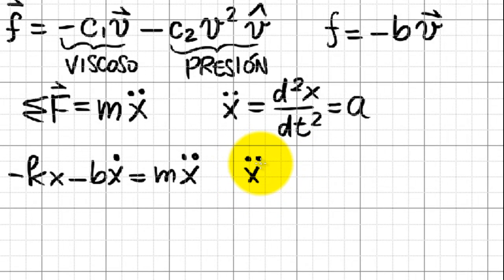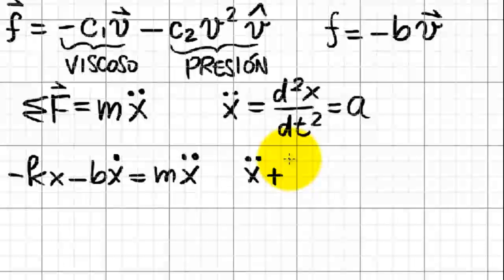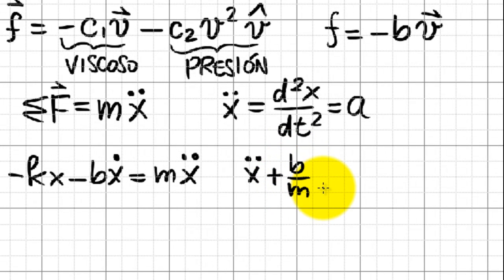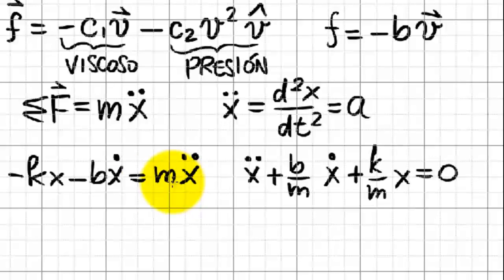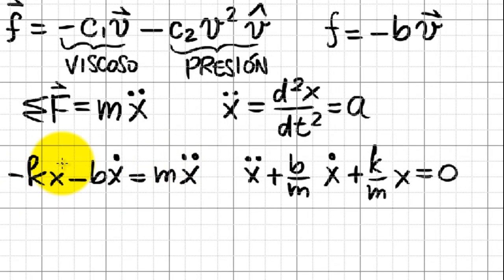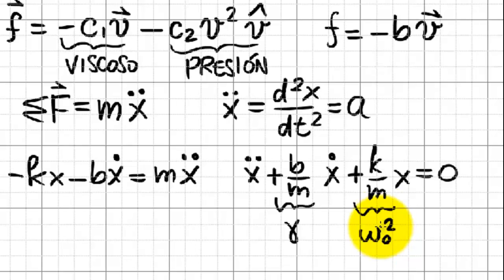I will rewrite this a bit different: x two dots plus v over m times x dot plus k over m times x equals 0. I just divided everything by m, and this term here is often called gamma, and this is our usual angular frequency omega zero for ideal oscillations.